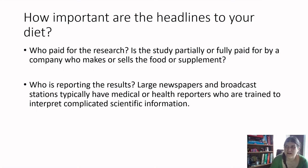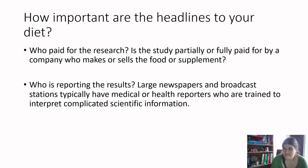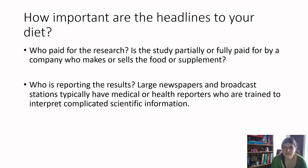Always check who paid for the research. Look for funding disclosures in the paper — is the study partially or fully funded by a company that makes or sells food or supplements? If so, there may be bias influencing the outcomes. Also consider who is reporting the results: large broadcast outlets typically employ trained science reporters with science degrees. A fly-by-night blog or personal journal is far less reliable. You can also look up researchers and their institutional affiliations at most post-secondary institutions.